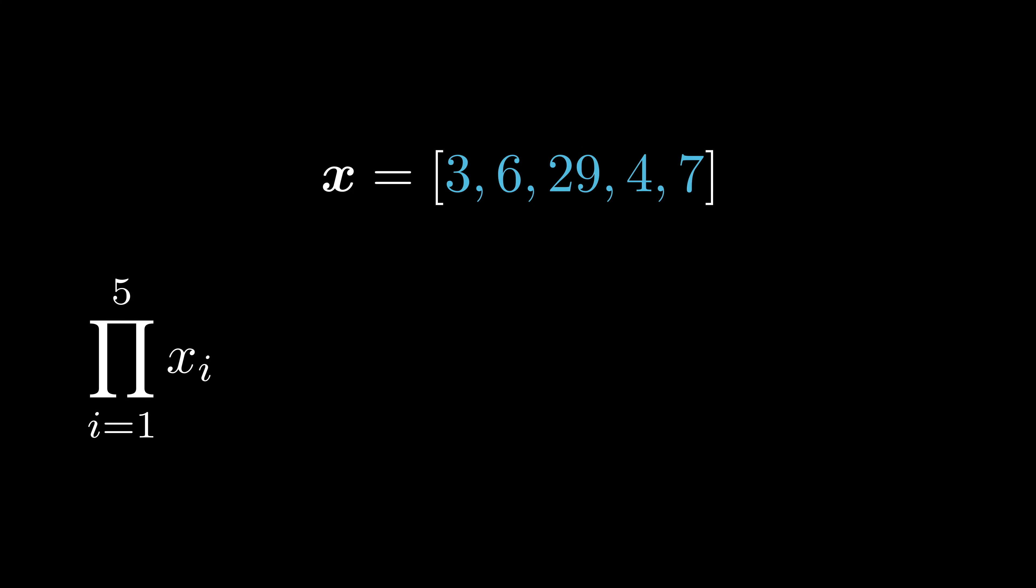The uppercase pi is the multiplication counterpart. It multiplies all the elements in a vector or list together.